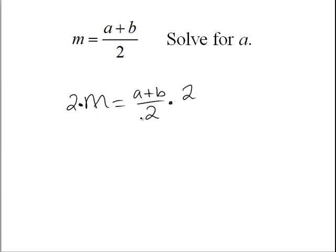Notice what happens. We eliminate the 2's on the right-hand side, since 2 divided by 2 is 1. So in essence, they line out. We then have 2M equals A plus B.